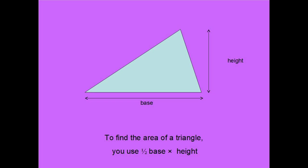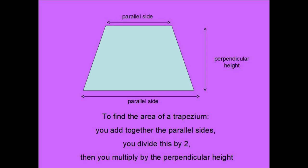To find the area of a triangle, you use half base times height. To find the area of a trapezium, you add together the parallel sides, divide this by two, then multiply by the perpendicular height.